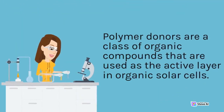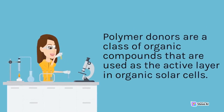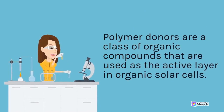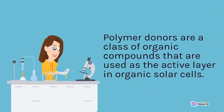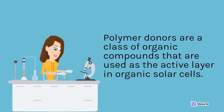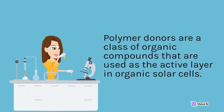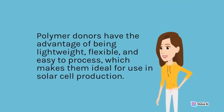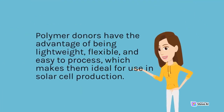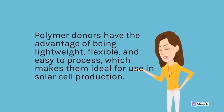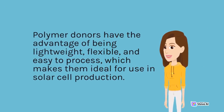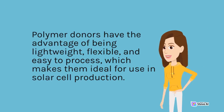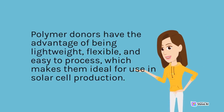Polymer donors are a class of organic compounds that are used as the active layer in organic solar cells. They have the advantage of being lightweight, flexible, and easy to process, which makes them ideal for use in solar cell production.